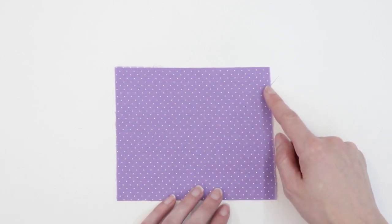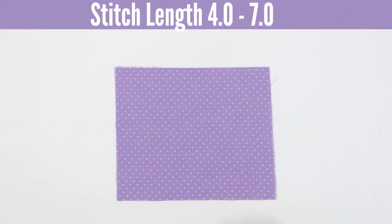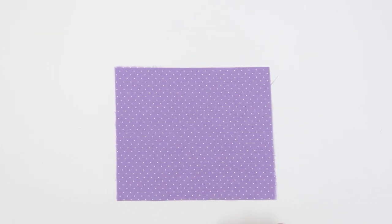You want to use a really long stitch length. This is usually the longest stitch length that's available on your machine. It can be anywhere from four to seven in length. Usually the longer the stitch length the easier it is to pull your gathers. So I'm going to be using a stitch length of 6.0 but you can use whatever the longest is on your sewing machine and I'm going to be sewing with a quarter inch seam allowance.